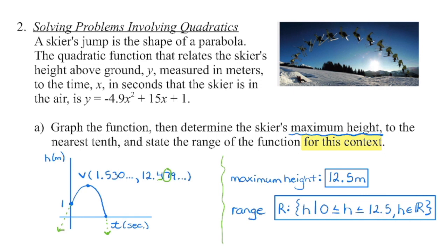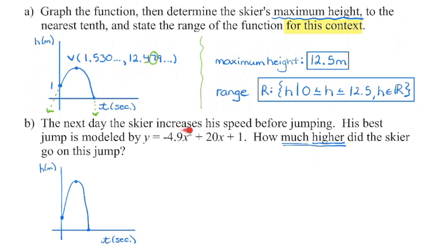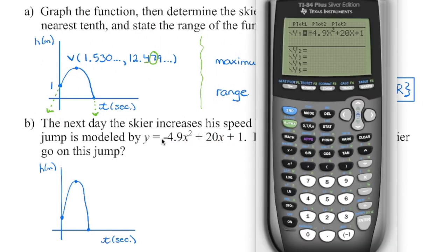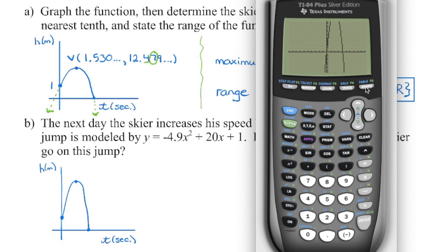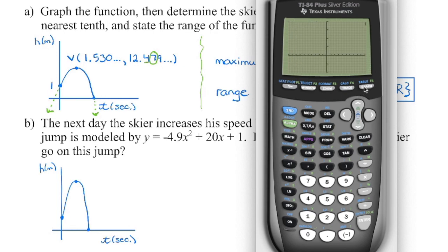In our last question, the skier increases his speed before jumping and we have a new function — we're changing that x value and looking for how much higher the skier went. The maximum height on the previous jump was 12.5. Let's graph this new function — make sure there's a negative in front, so press the negative key. We take a look at the graph but again we need that maximum and can't quite see it. On the y-axis we're going to increase the y-maximum. Let's try 20. Going from negative 10 to 20 is 30 units, so I don't want a tick mark every unit — I'll change the scale to 5, meaning every five units there will be a tick mark. It's still not quite visible, so let's go to 30.